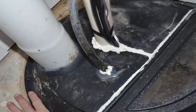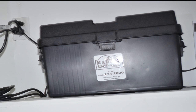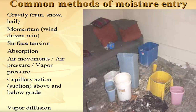We'll talk about common methods of moisture entry: gravity — rain, snow, hail; momentum — wind-driven rain; surface tension; absorption; air movements; air pressure; vapor pressure; capillary action; suction above and below; and vapor diffusion.